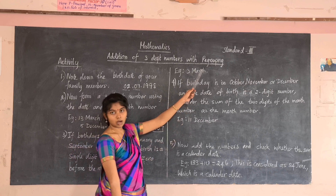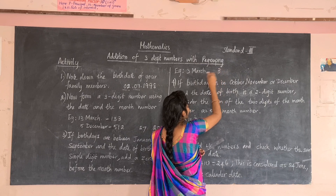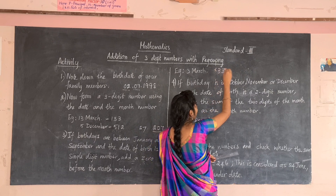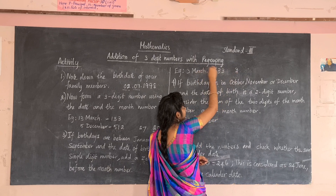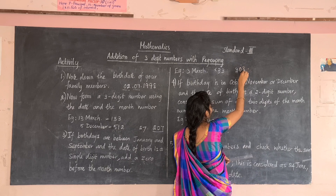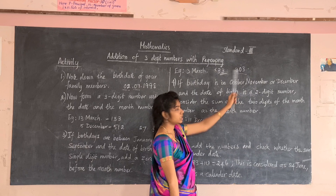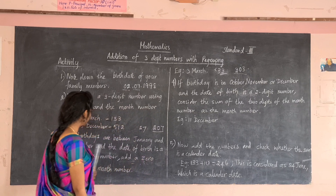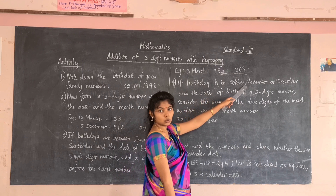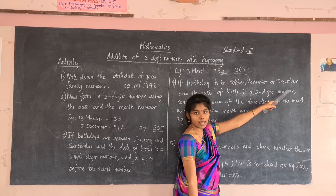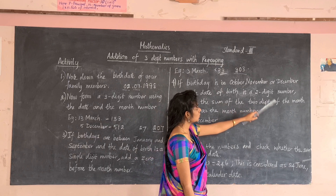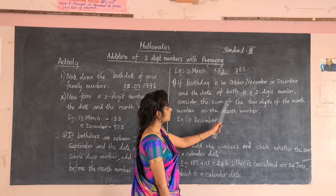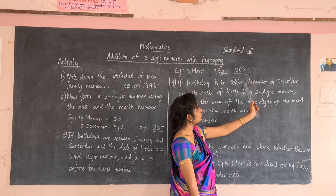For example, 3rd March: the date is 3 and the month is also 3. We cannot write it as 33 — that is only two digits. So we write 3 (date) and then 03 (month with zero prefix) to form 303, a proper three-digit number. For October, November, and December the month numbers are 10, 11, and 12 — two-digit numbers. If the date is also two digits, you would get four digits.